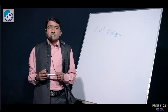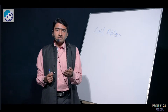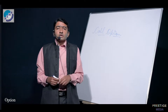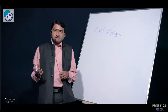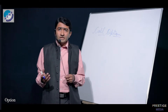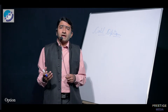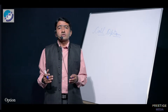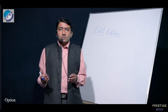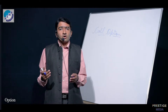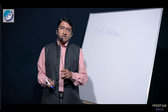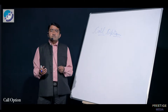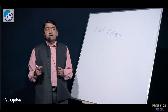Options are of two kinds, but before studying the two kinds of options, we need to understand what an option is. An option is a derivative that gives the holder the right to buy or sell an asset — the right to purchase or sell depending on its kind. There are two kinds of options. The first one is a call option, which gives the holder the right to buy.